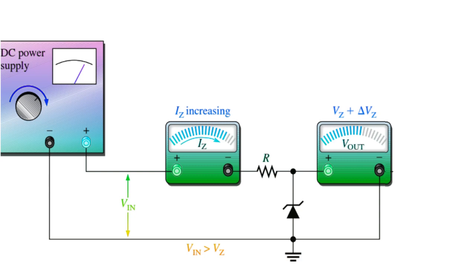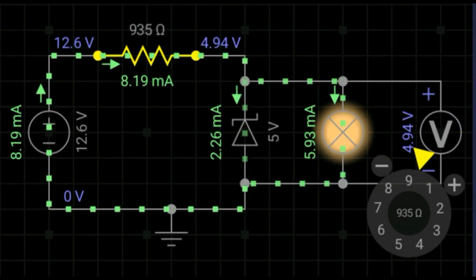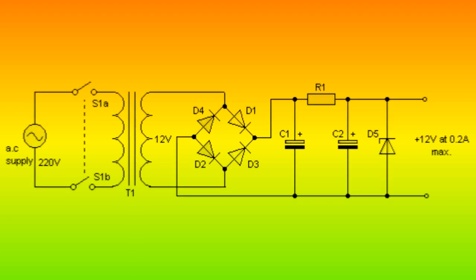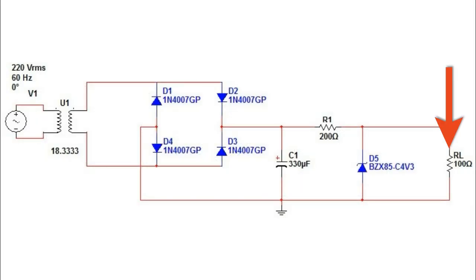Even if the input voltage changes or the load current changes, the Zener diode voltage regulator consists of a current limiting resistor RS connected in series with the input voltage VS and a Zener diode connected in parallel with the load RL in reverse bias mode. The stabilized output voltage is always chosen equal to the Zener breakdown voltage or VZ.